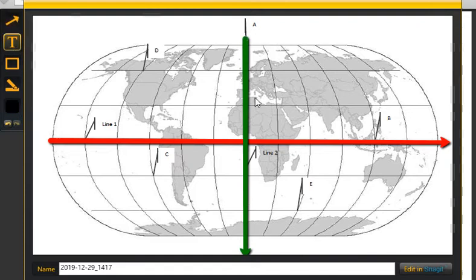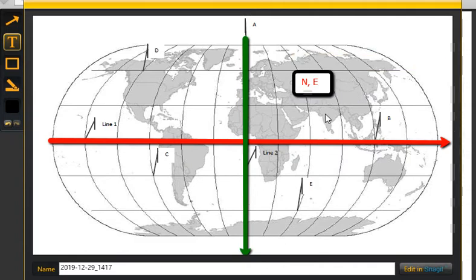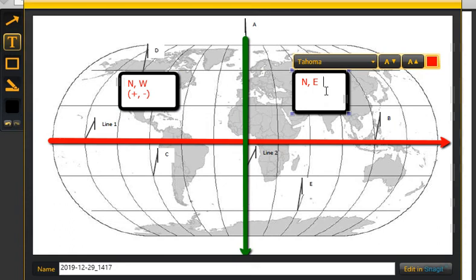So if you were writing down coordinates, anything in this quadrant would be in the northwest, and sometimes this is identified with a positive symbol and a negative symbol. And this quadrant could be identified with a positive symbol and another positive symbol.